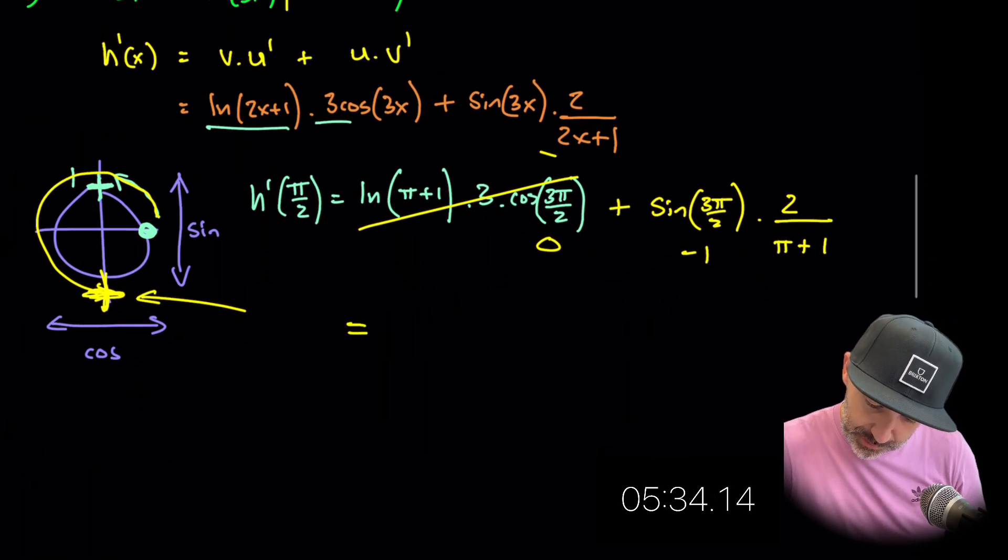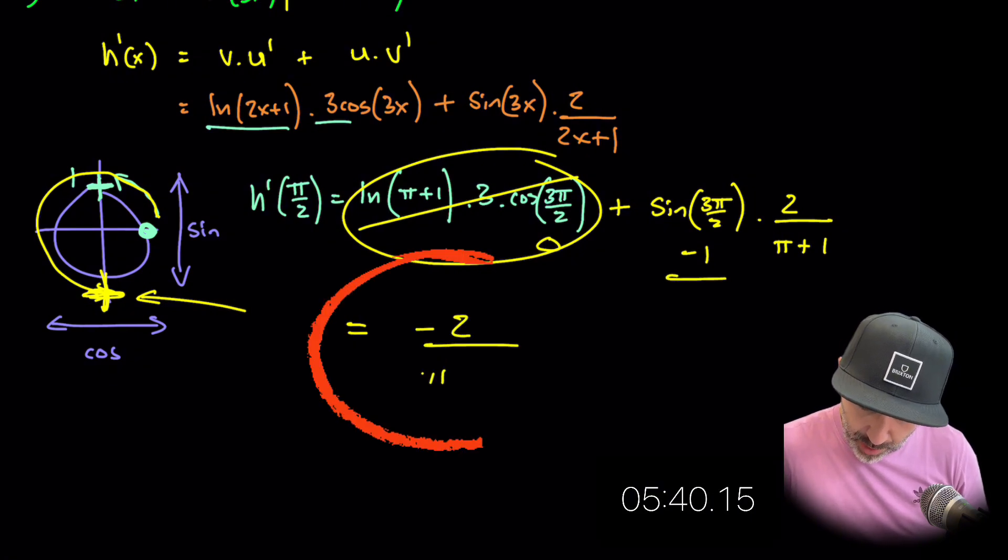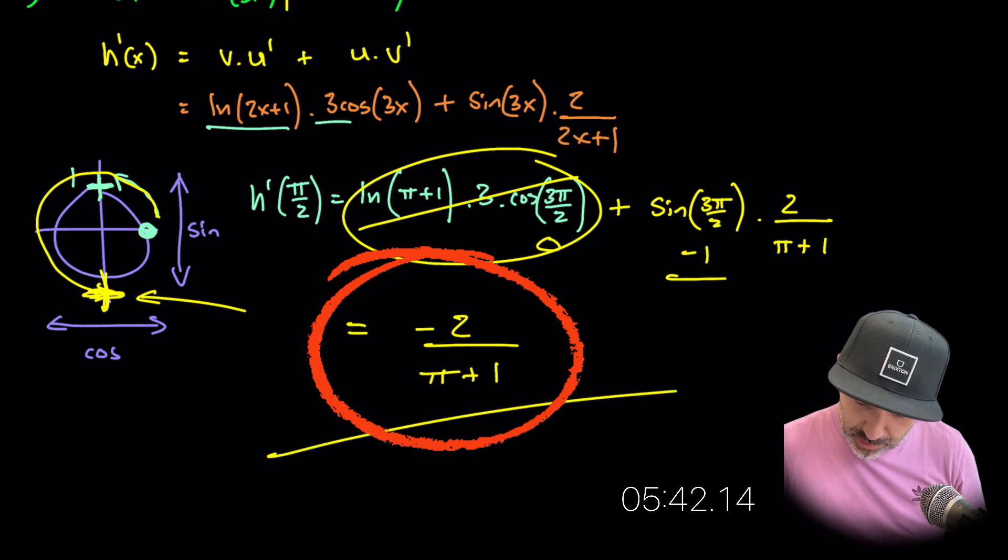So if we just actually tidy this up completely this whole thing is 0. This is minus 1 times this. So we're getting at negative 2 over pi plus 1. Stop the clock.